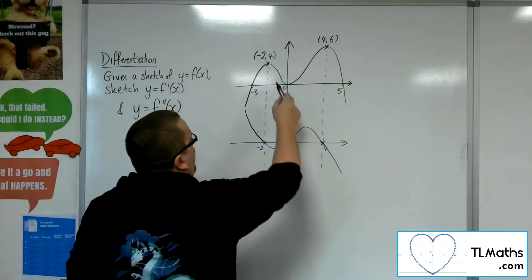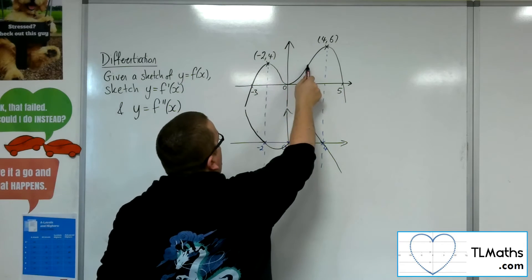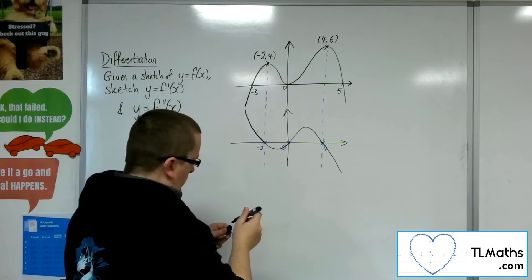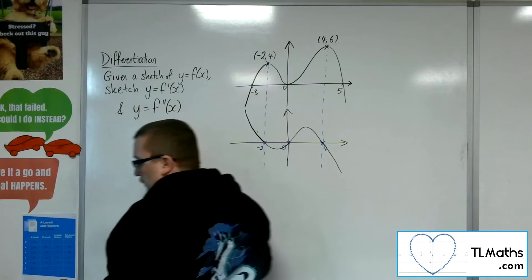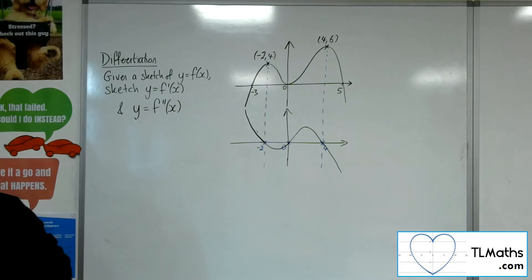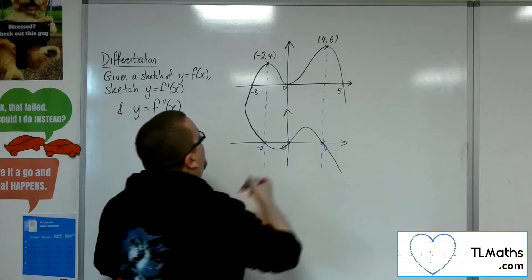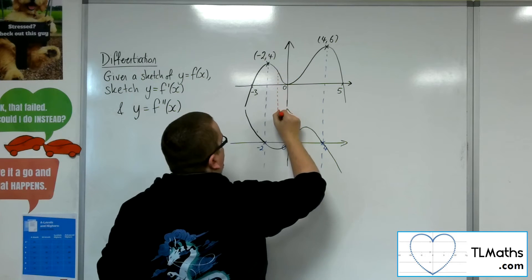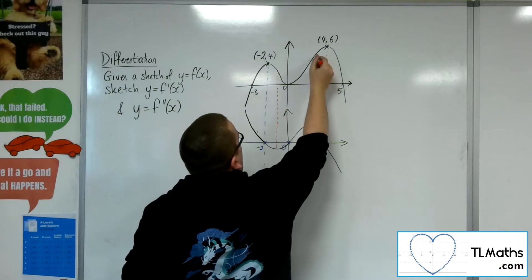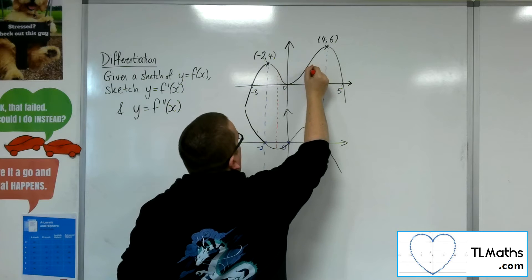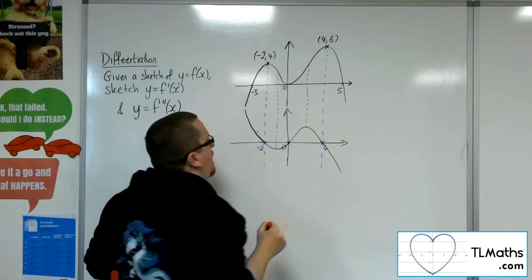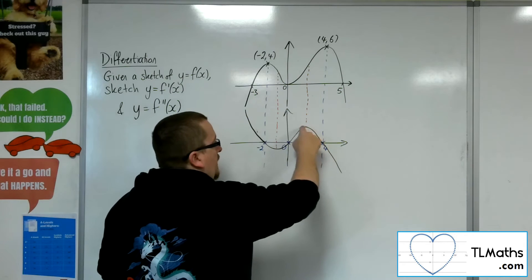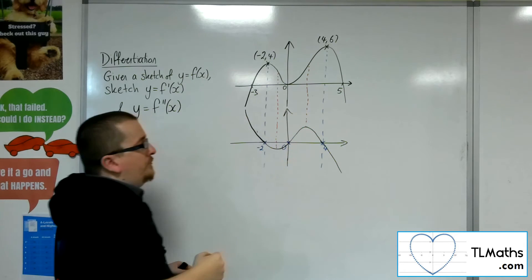Now at these points, here and here, where there was seemingly a maximum gradient that we had, these are actually quite important points in themselves. So these are points of inflection. And you can see that these points marry up with where this curve is stationary.